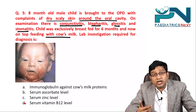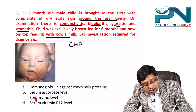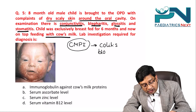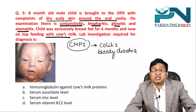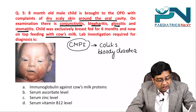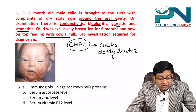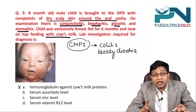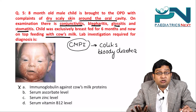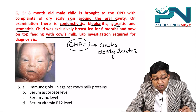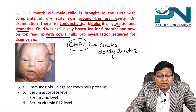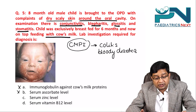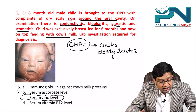Serum ascorbate level is ruled out because breast milk contains adequate vitamin C, and vitamin C deficiency would not cause glossitis, blepharitis, or conjunctivitis. Vitamin B12 is present in animal-origin foods and can cause glossitis and stomatitis but not the other features. The correct answer is serum zinc level. In zinc deficiency, skin lesions can be vesicobullous, eczematous, dry/scaly, or psoriasiform, symmetrically distributed in the perioral, acral, and perineal areas, as well as cheeks, knees, and elbows.